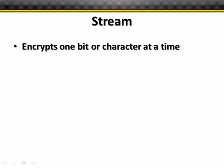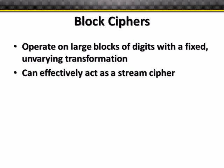Now let's look at streaming ciphers versus block ciphers. A streaming cipher encrypts one bit or a single character at a time — a small unit. A block cipher works on larger fixed-size blocks of digits, applying an unvarying transformation to one block in succession after another. Some block ciphers can effectively act as stream ciphers.